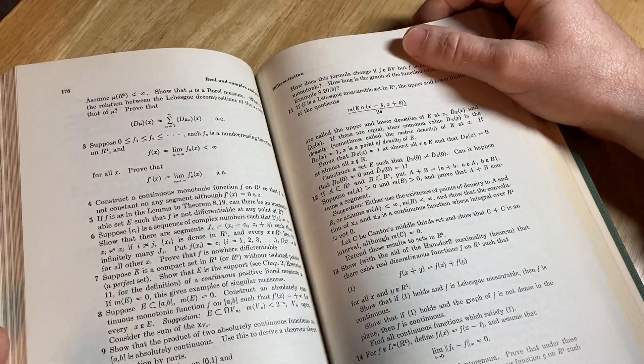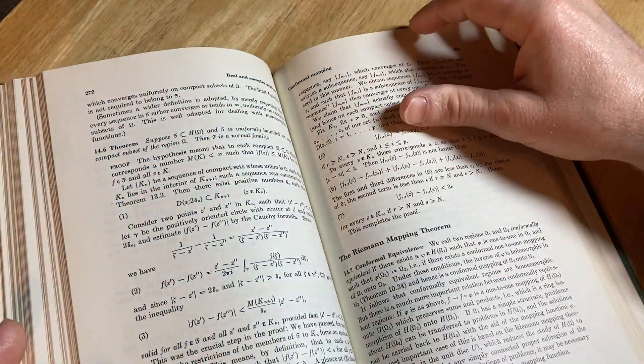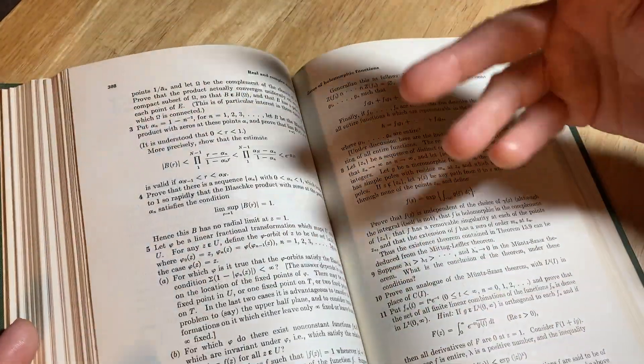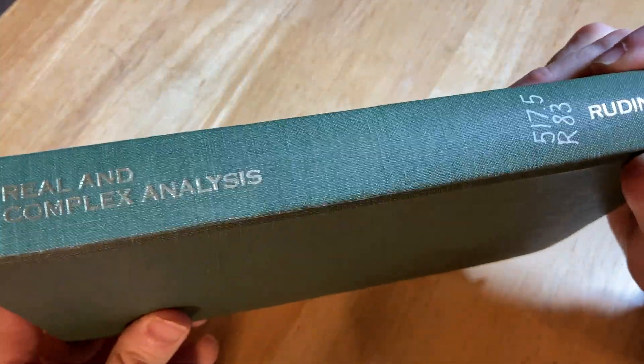When I studied measure theory, we used the Folland book. That's also a very good book. But none of these books are inexpensive. These measure theory books are always pretty expensive. I got this one for just a few dollars a long time ago. I was really lucky.